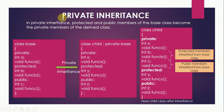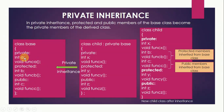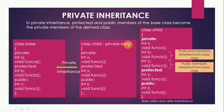Now let us take an example so that private inheritance is more clear. In private inheritance, protected and public members of the base class become the private members of the derived class. Suppose we have a class named Base with three sections: private contains int a and void funcA; protected contains int b and funcB; public contains int c and funcC. The class Child inherits from class Base with private mode of inheritance. The child class itself has: private — int x and funcX; protected — int y and funcY; public — int z and funcZ.